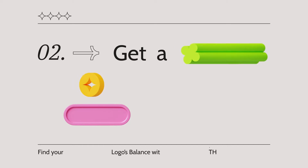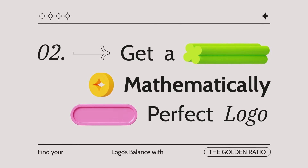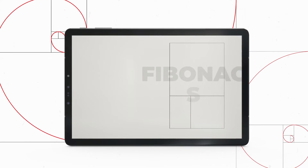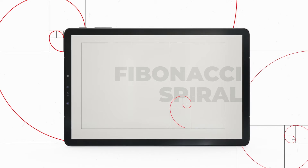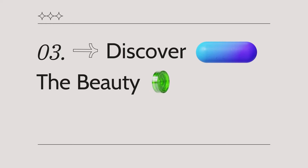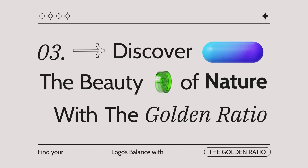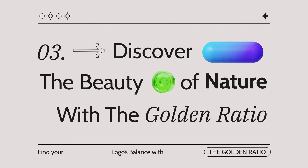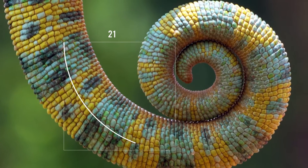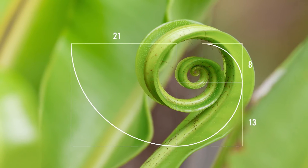Get a mathematically perfect logo. Each value is the combination of the two preceding values. Discover the beauty of nature with the Golden Ratio, and flow through the mathematical beauty and its power of attraction.